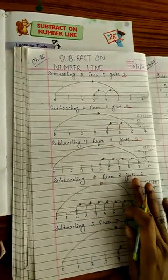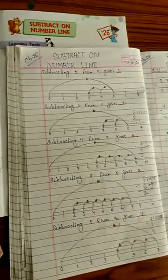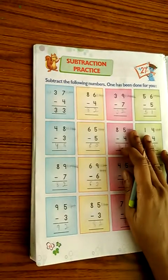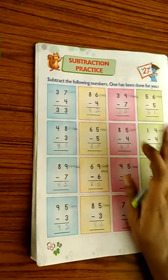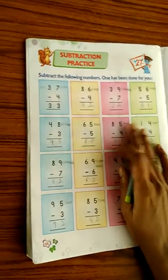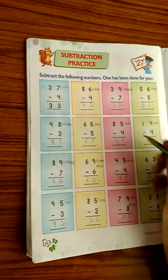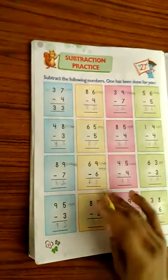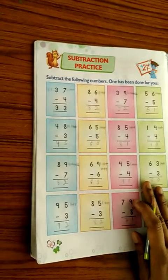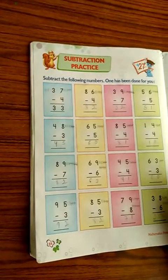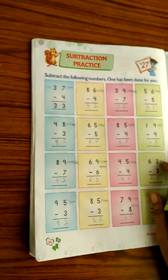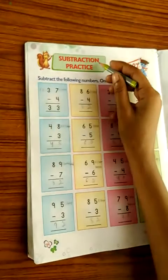Now comes the next chapter — chapter 27. In this chapter, we have already done so many additions and subtractions, so now we just have to find the answers. Here there are some questions. We will practice subtractions.